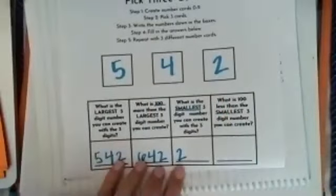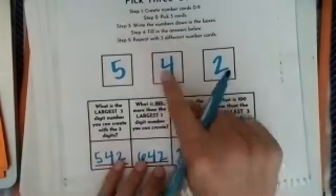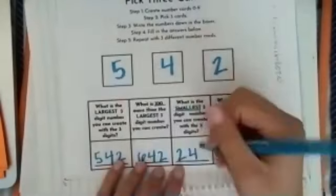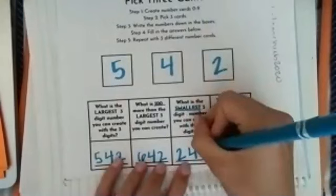Now I'm looking for the next smallest number. Is 5 smaller or is 4 smaller? Well, I know that 4 is smaller than 5, so I put it in my tens place. And last but not least, I'm looking at my last number is 5. So that is going to be in my ones place. So the smallest three-digit number that I could create is 245.